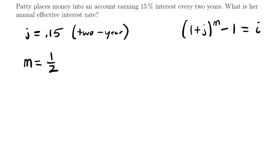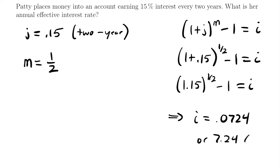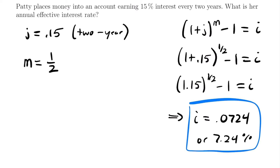Let's plug in what we know. We have (1 + 0.15)^(1/2) − 1, which equals our annual effective interest rate. Simplifying, we have 1.15^(1/2) − 1 = i. Taking the square root of 1.15 and subtracting 1, we find that the annual effective rate is equal to 0.0724, or 7.24%. That's the equivalent annual effective interest rate for Patty's two-year 15% interest rate.